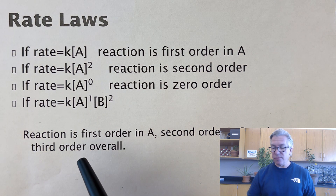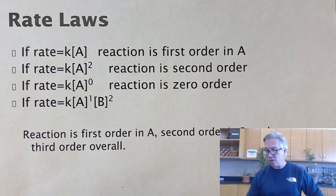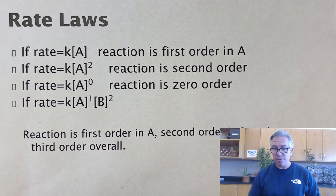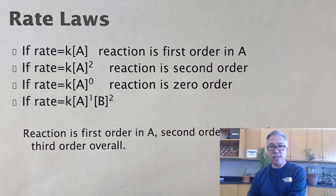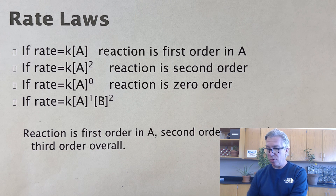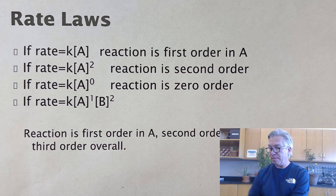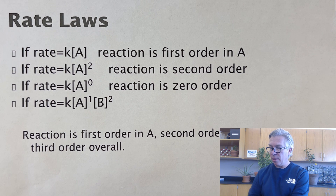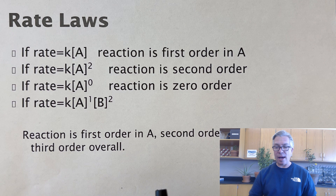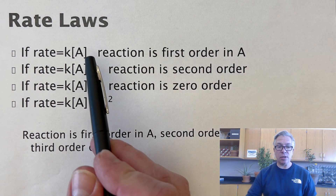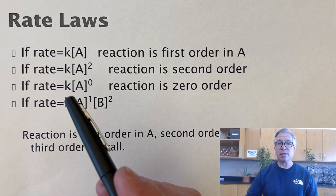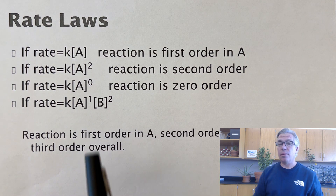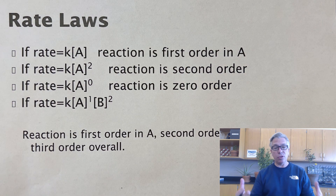In our first video, we looked at the decomposition of N2O5 and saw a couple of graphs. That actually is a first-order reaction, so the rate slows down as some of it gets used up, and it's proportional to how much is there at any given time. You might now be wondering how we determine those numbers experimentally.